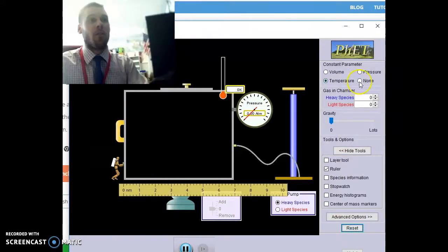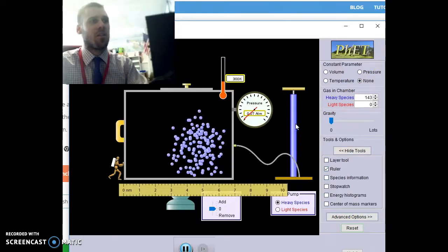The third graph is going to focus on Charles' Law, which is the relationship between volume and temperature. So once again, I hit the reset button. Let's get some gas particles in the chamber.